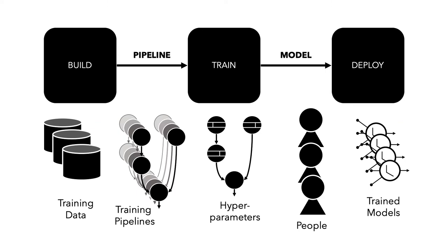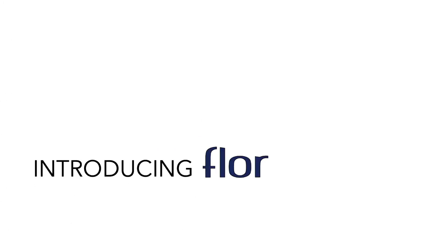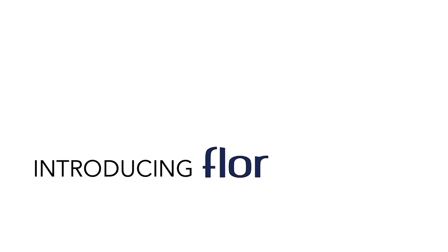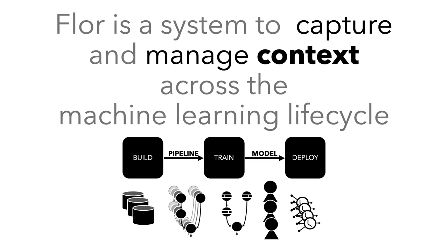If we're tracking context, what are some things we might be able to do? If we identify a problem with training data and know who the producers are, we might be able to fix a data set rather than abandon it. When considering different versions of training pipelines, being able to check out something from the past in a consistent state and reuse it is very valuable. The hyperparameter association with scores could be used for optimization. With that in mind, we've been focusing on developing Flor — a system to capture and manage context across the machine learning lifecycle.